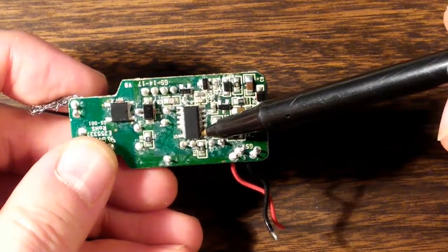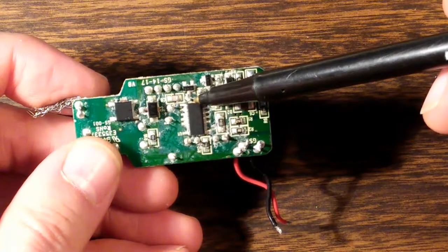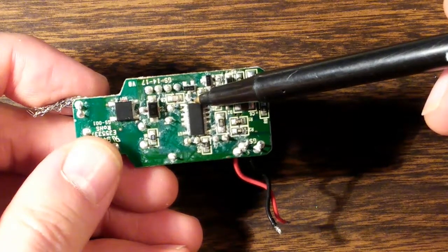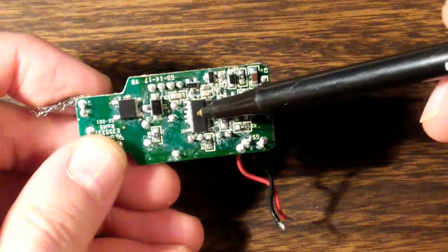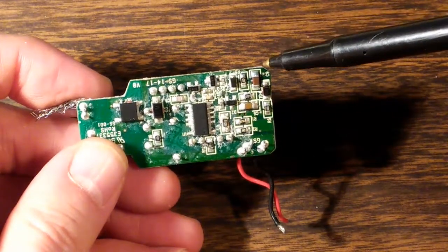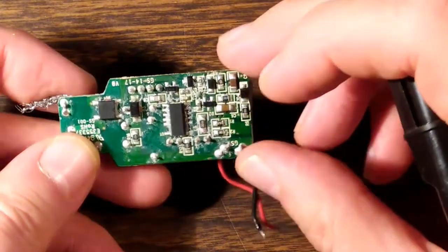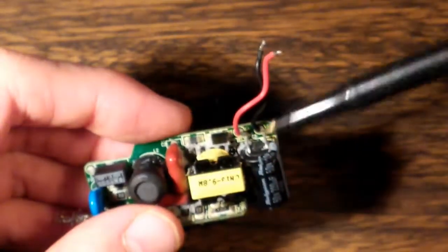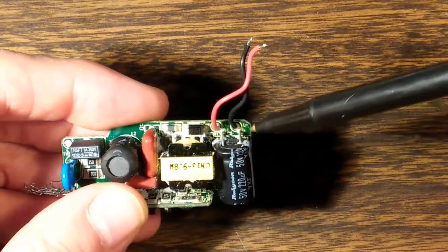Now this chip here is the brains of the operation. This chip is called SSL21082. It's a driver for LED lights, made by NXP semiconductors. Then on the output here we've got your standard diode and big old capacitor.